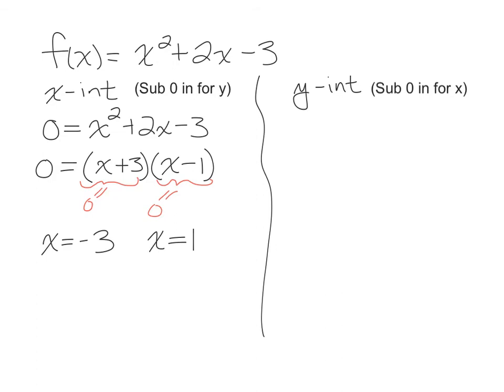One important thing to note here is these answers are not x-intercepts. What we need to do is we need to fill out the rest of the ordered pair. So negative 3 comma something and 1 comma something. If you go back all the way to the beginning here, it says substitute 0 in for y. So the y-coordinates for each of these will be 0. Here are your x-intercepts.